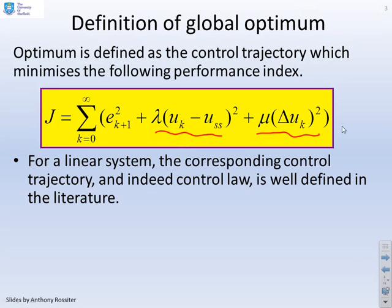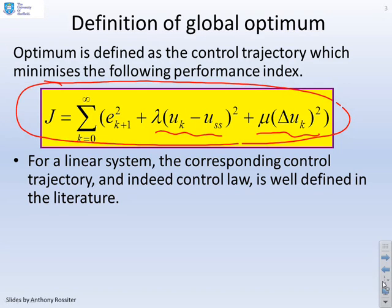For a linear system, the corresponding control trajectory and indeed control law is well defined in the literature, and that's quite important. If you define global optimum using a performance index like this, then the solution for the optimum control law is well known.